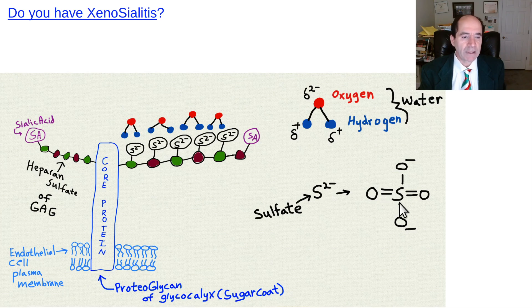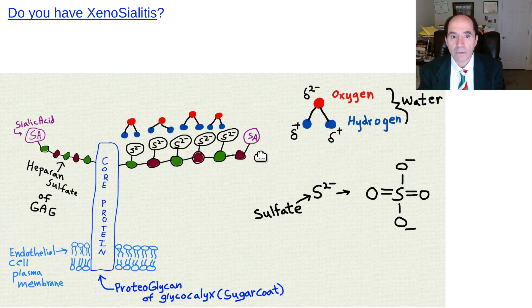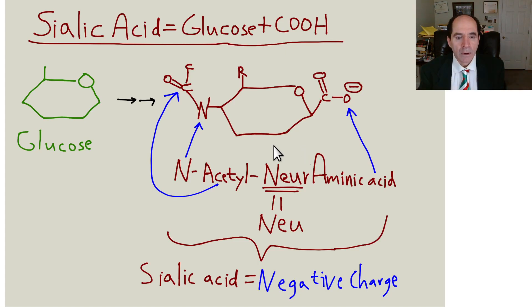Here's your typical sialic acid. It's very much like a glucose molecule just with a carboxylic acid attached to it. There's a little bit more to it, but that's all you need to know - a glucose with a carboxylic acid. The key thing is that it has a negative charge on it, so it contributes to the zeta potential of the cell.